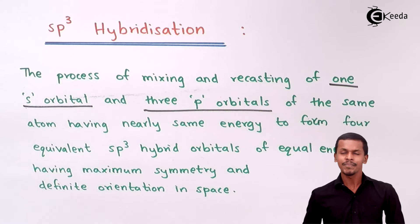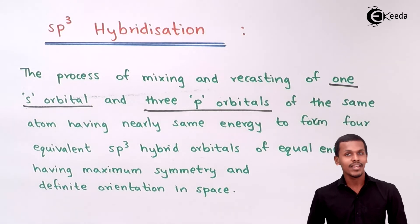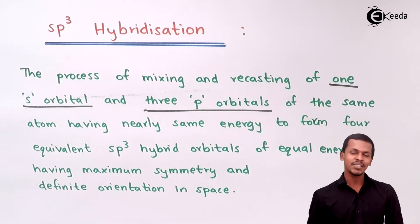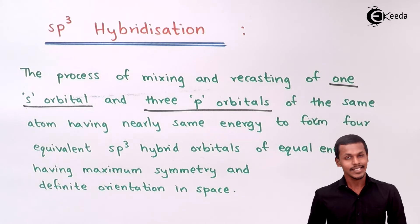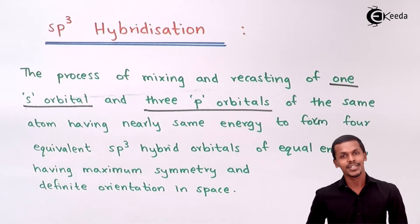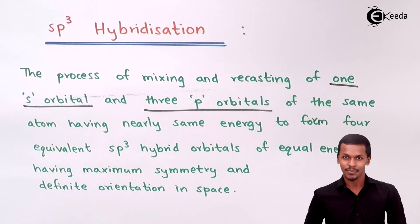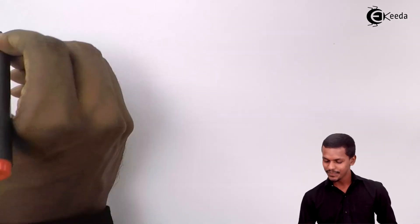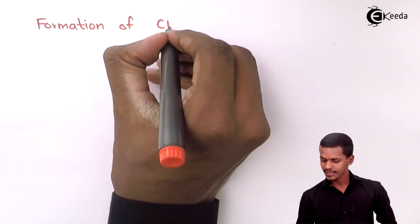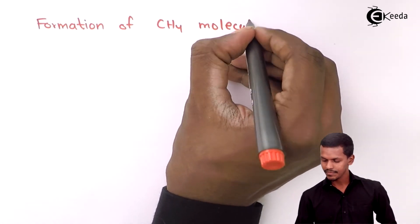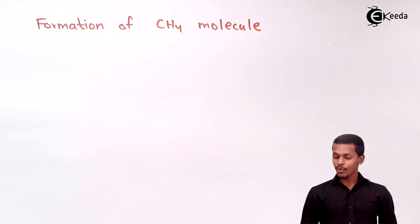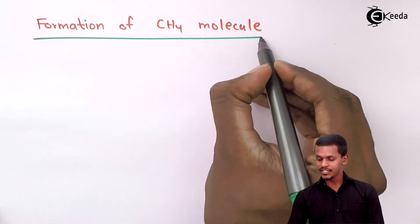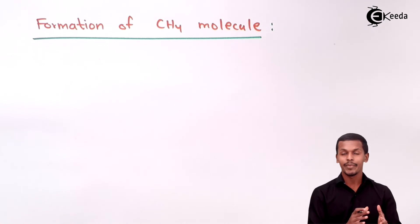The definition is incomplete without an example. So let us understand sp3 hybridization through the example of the formation of the methane molecule, CH4. Let us talk about how the CH4 molecule forms in terms of hybridization.